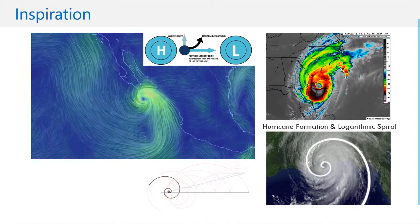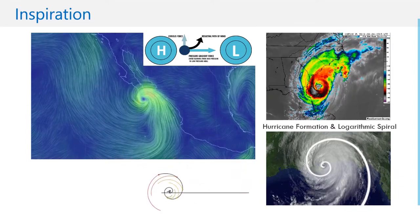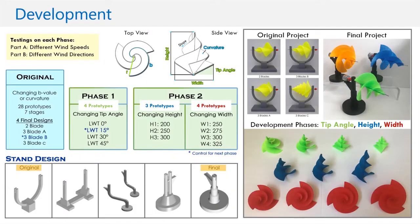I used 3D modeling to improve my original turbine in two phases. First, changing tip angle, and second, changing the height and width. I also developed four different stand designs to help improve turbine efficiency.